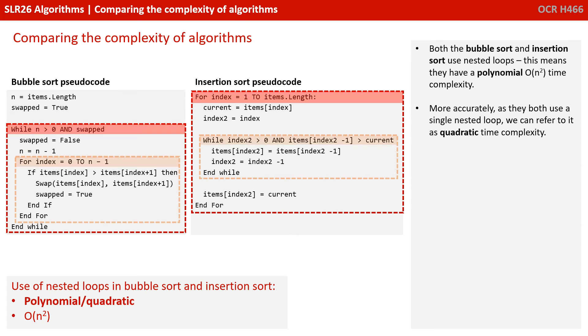Both the bubble sort and insertion sort that we've previously looked at use nested loops, and this means they have a polynomial or O(n²) time complexity. More accurately, as they both use a single nested loop, we can refer to it as quadratic time complexity.